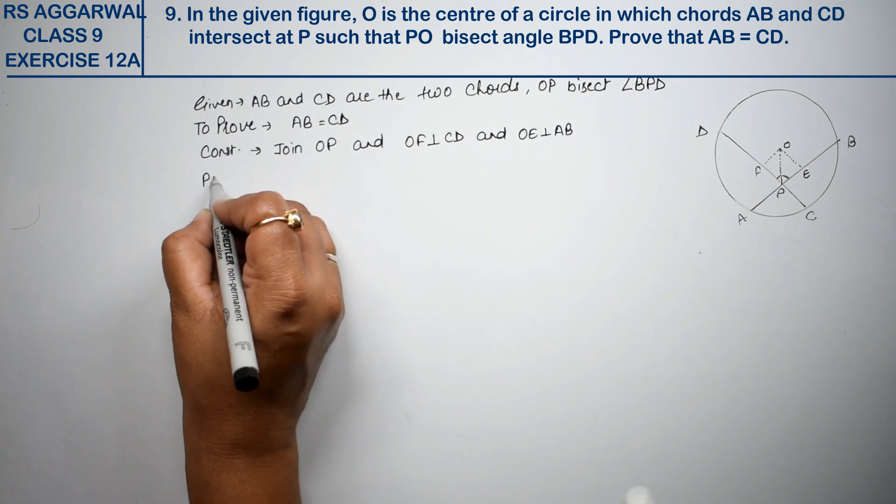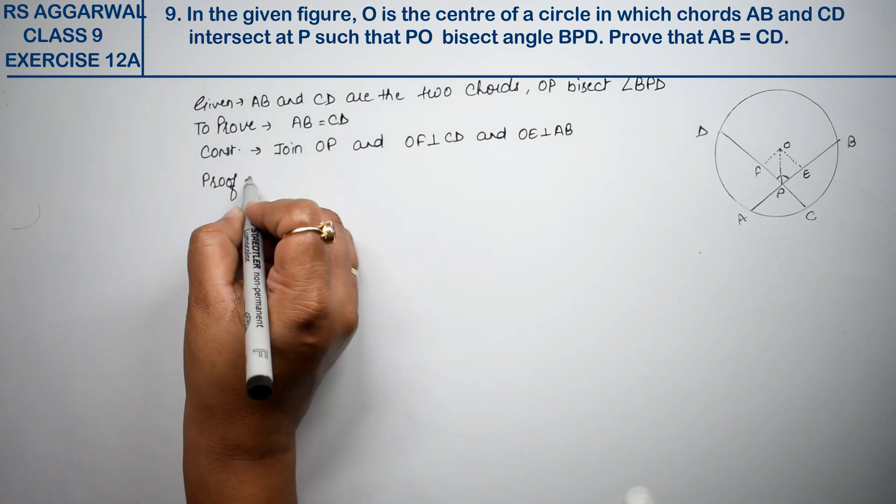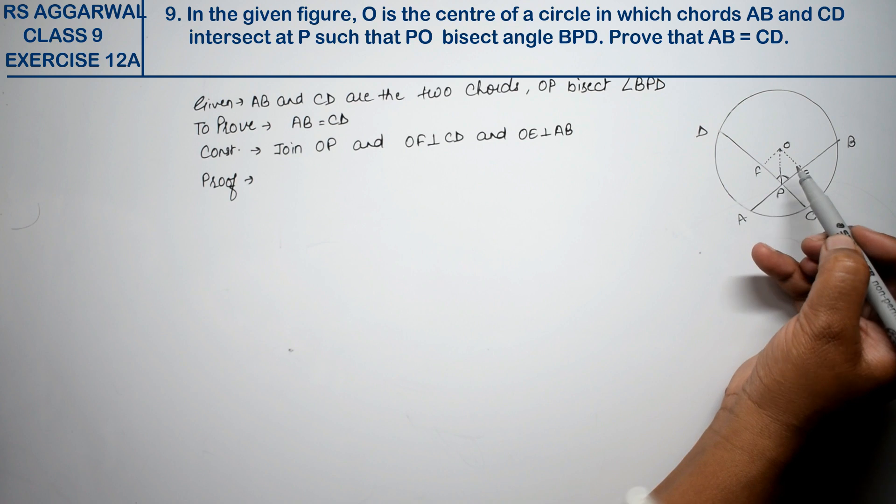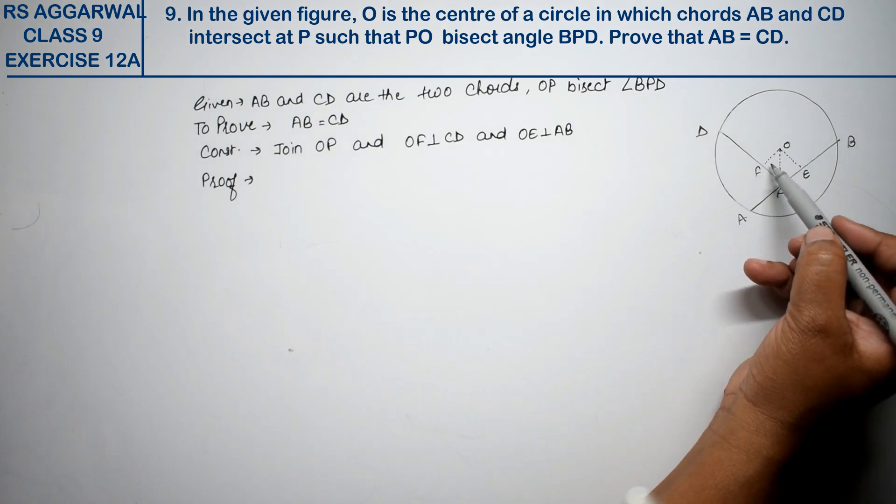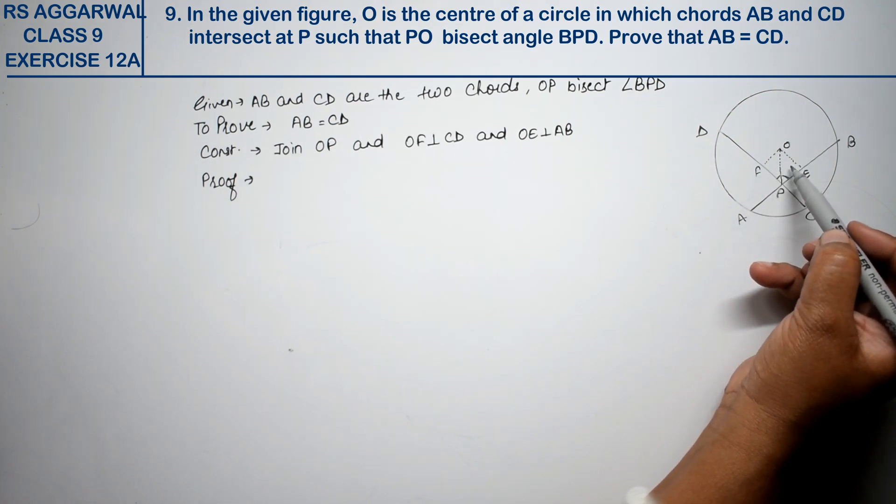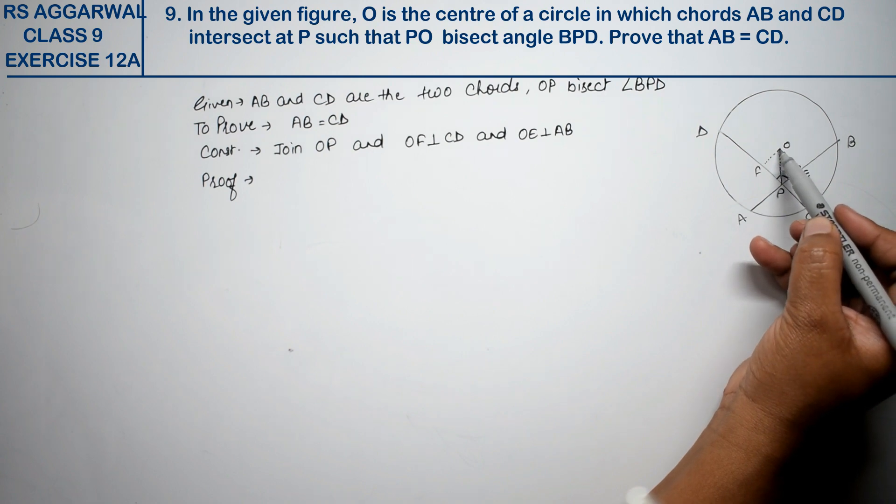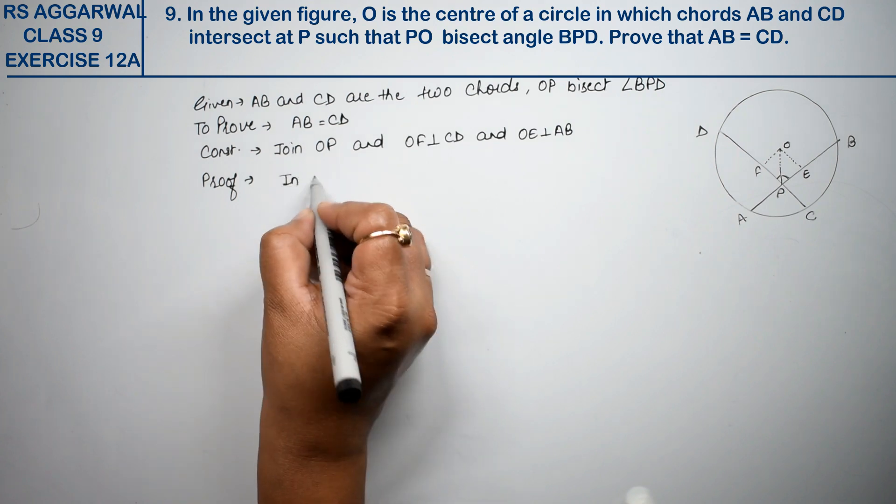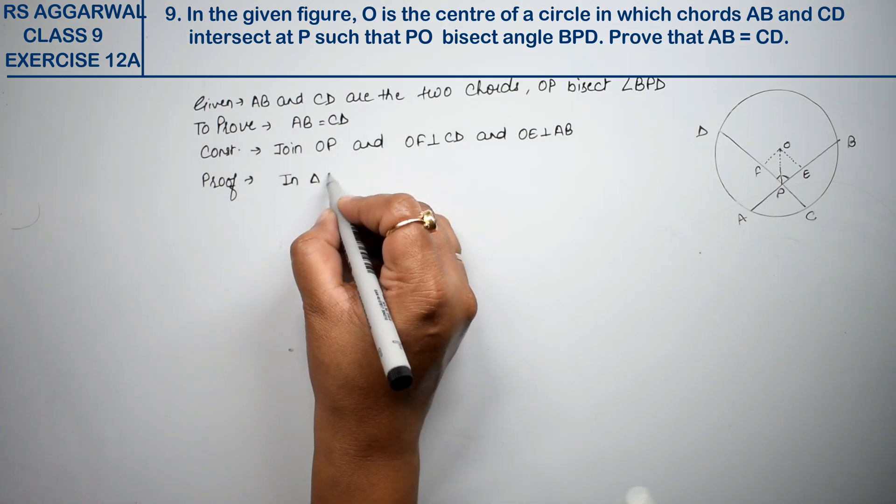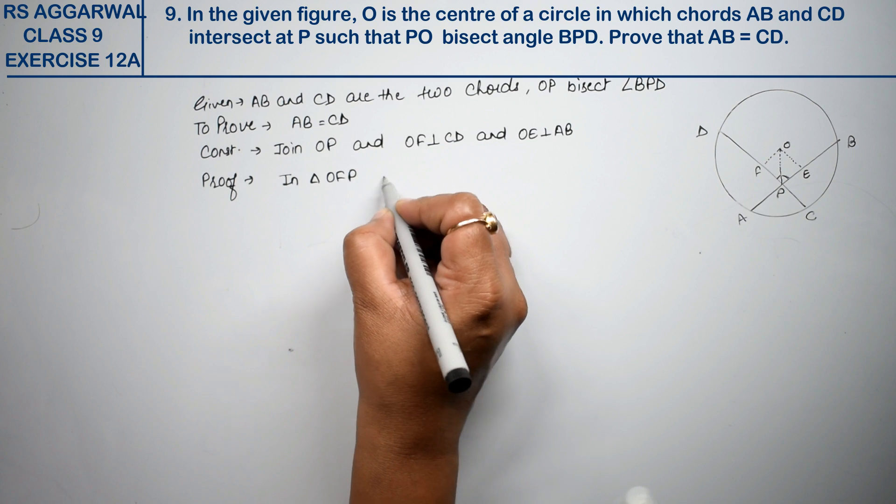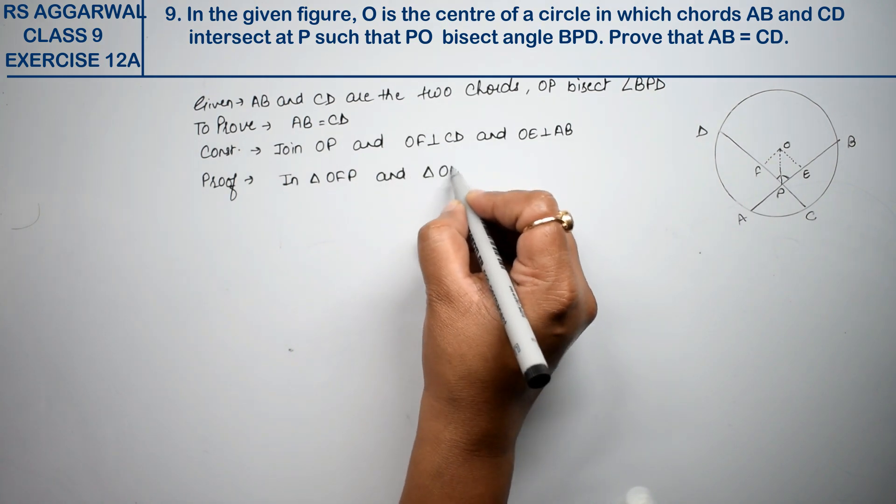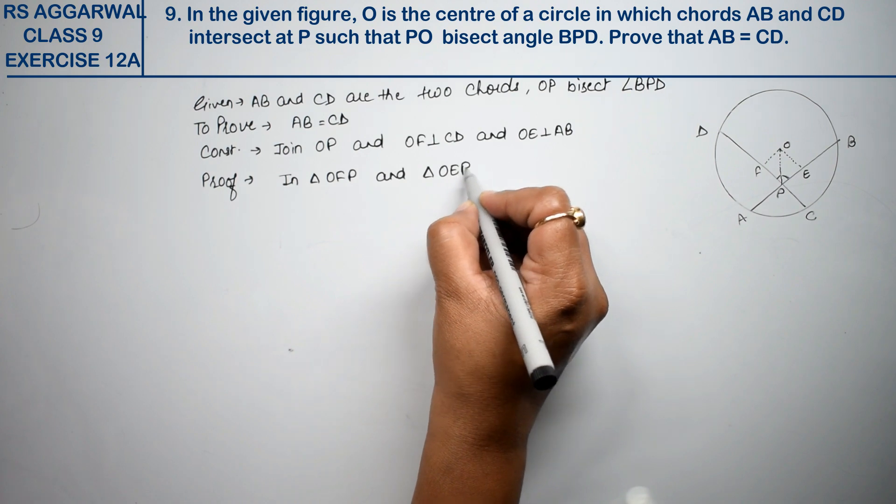Now proof. How will we prove? See, we have two triangles formed. So we'll take these two triangles: triangle OFP and triangle OEP. Now see.